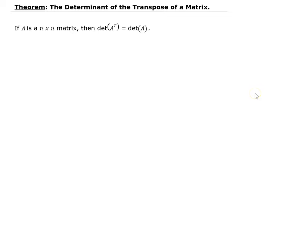This theorem states that if A is a square matrix, in this case an n by n matrix, then the determinant of A transpose is equal to the original determinant of A.